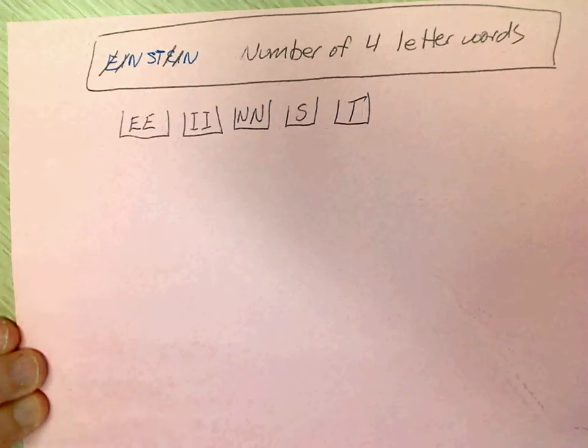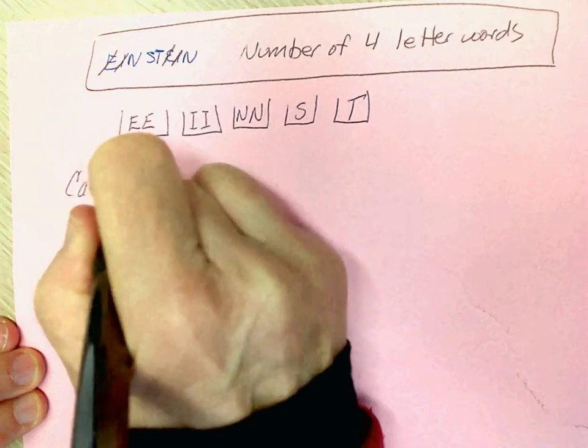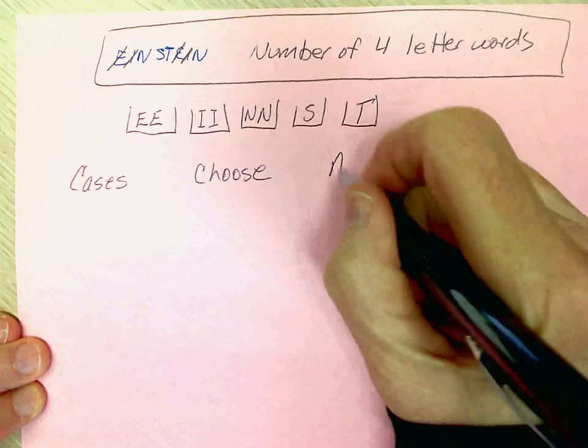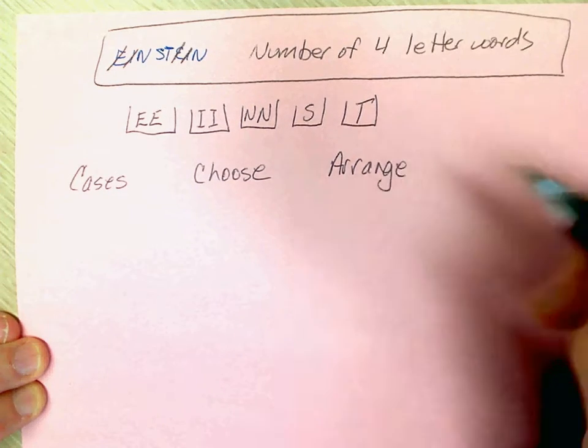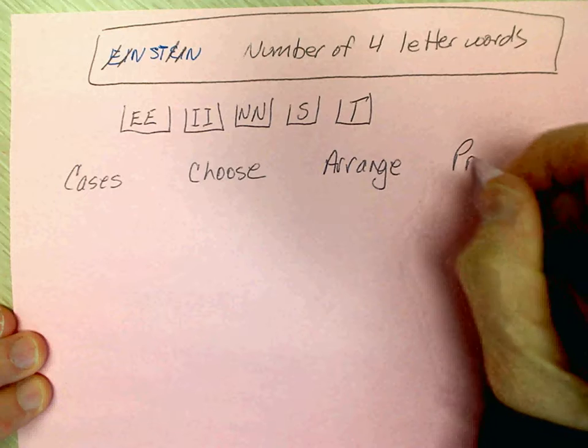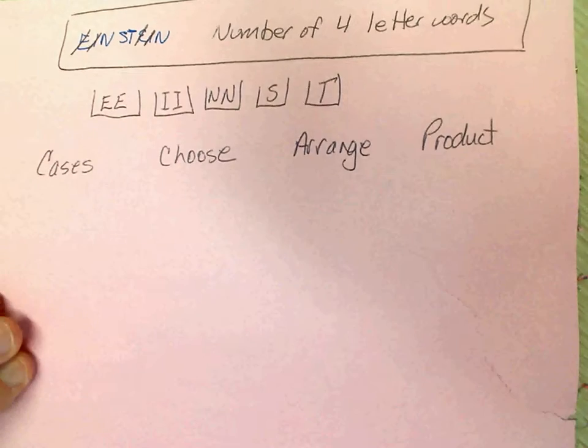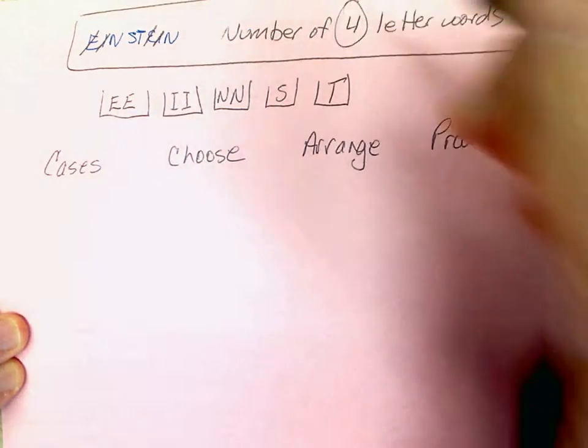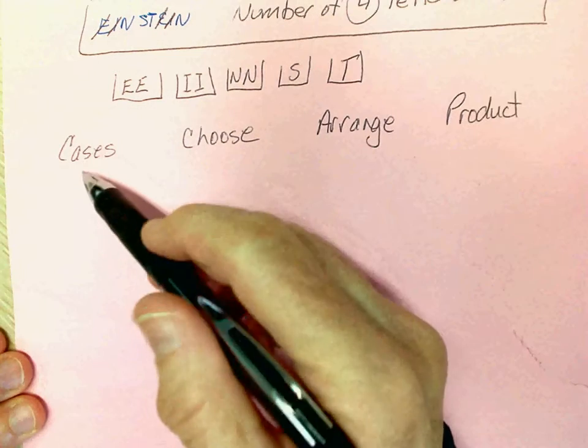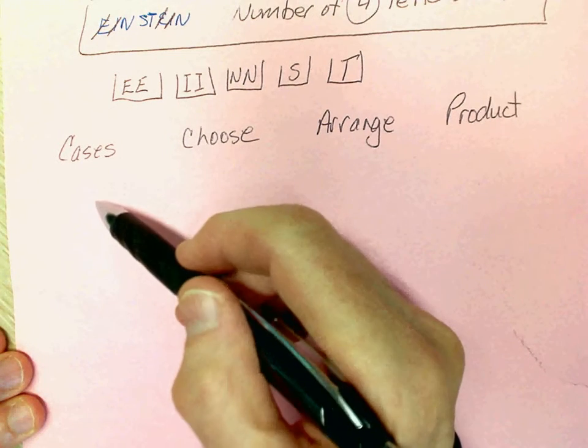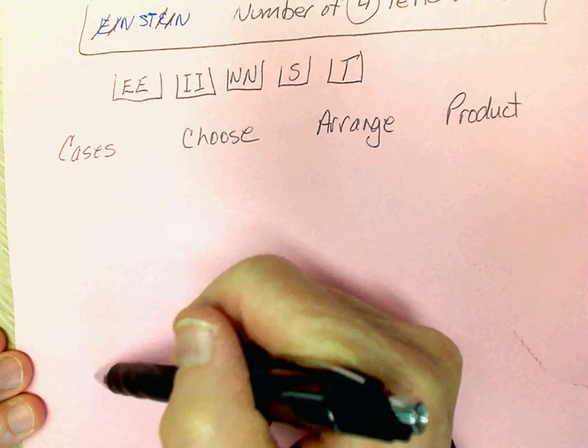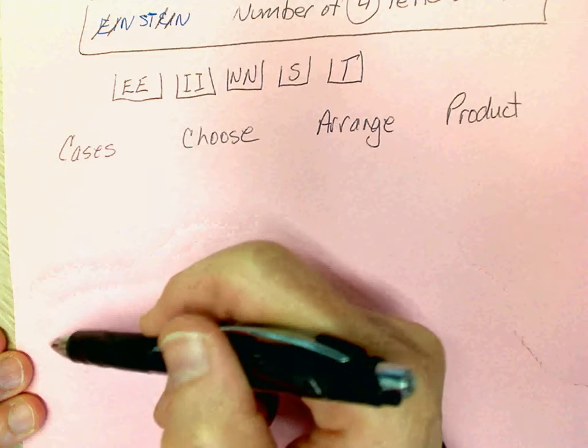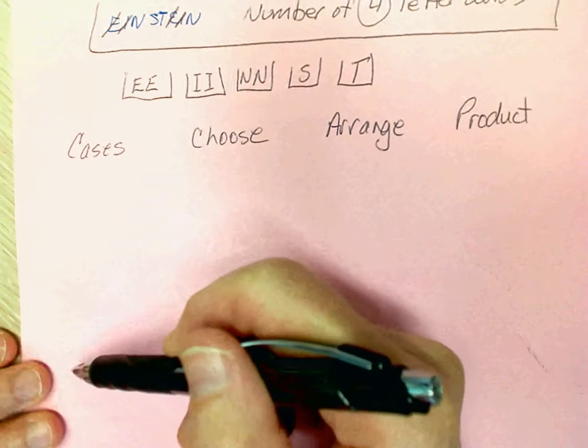So what we want to do is get our cases, do our choosing, do our arranging, then we want to find the product and add them together. We're doing four-letter words, so we're going to start with the cases that are the most different and work up to what's most the same. That way we don't skip a case.